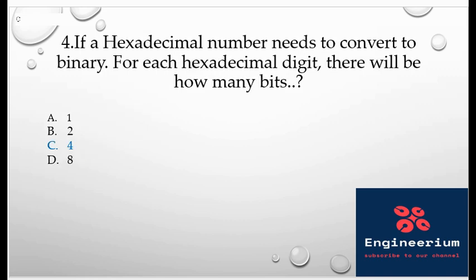If a hexadecimal number needs to convert to binary, for each hexadecimal digit there will be how many bits? So we know that when we convert the hexadecimal, we need four bits, like F in hexadecimal is equal to 1111 in binary.